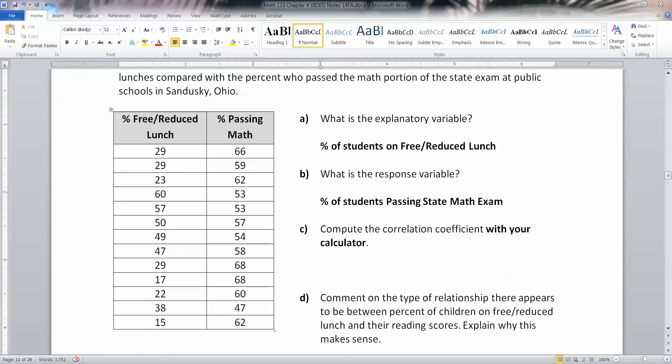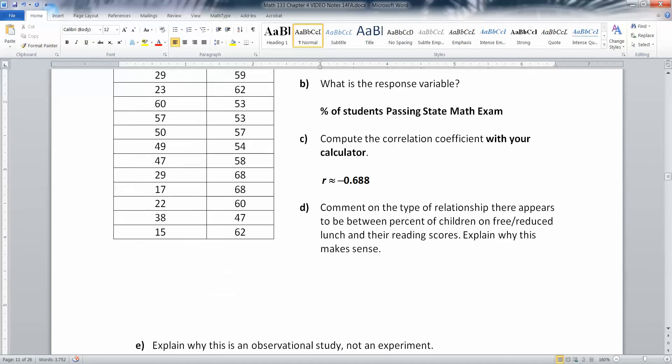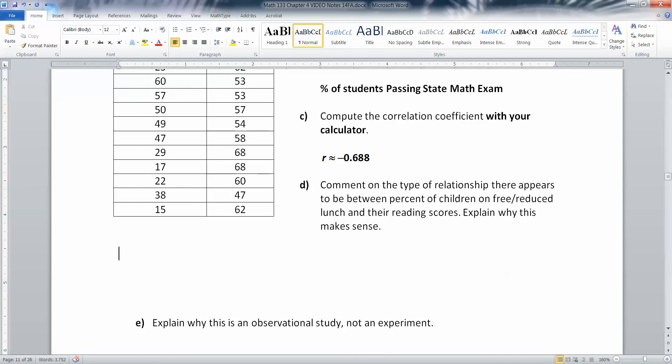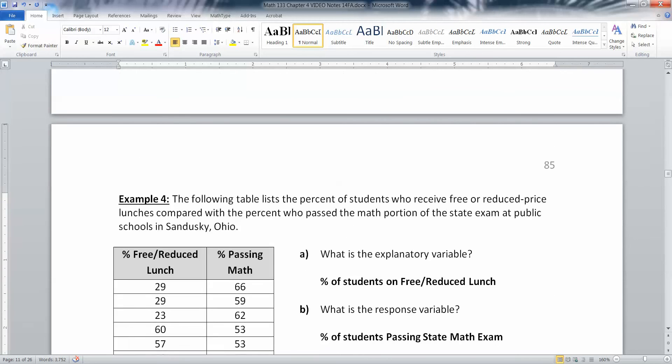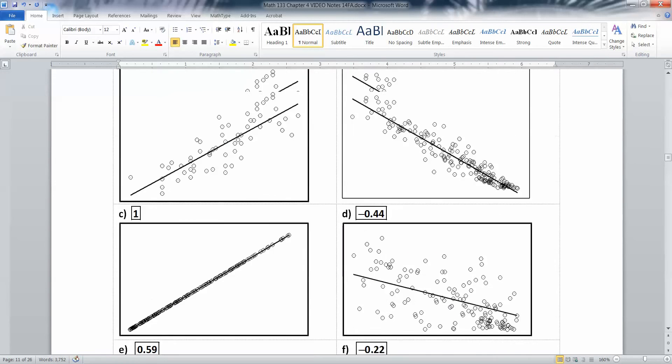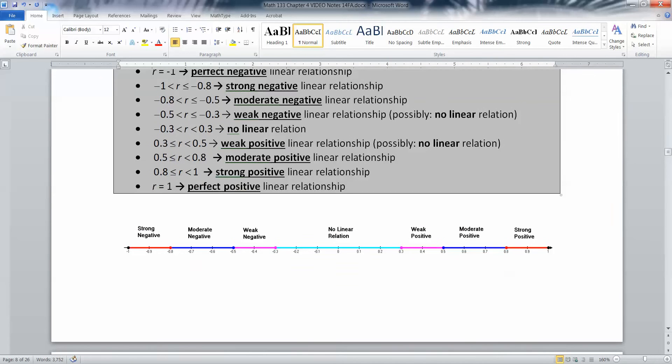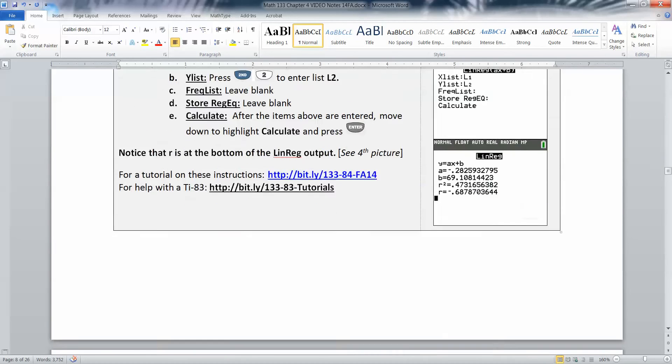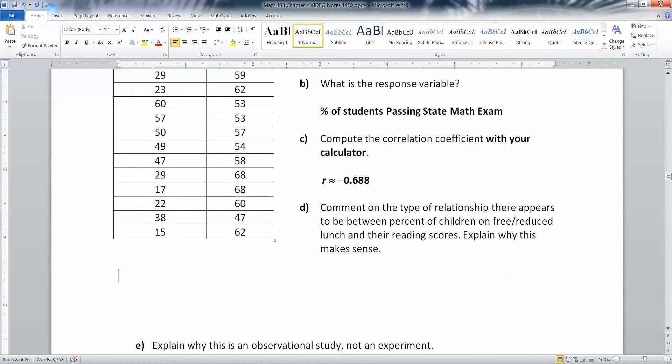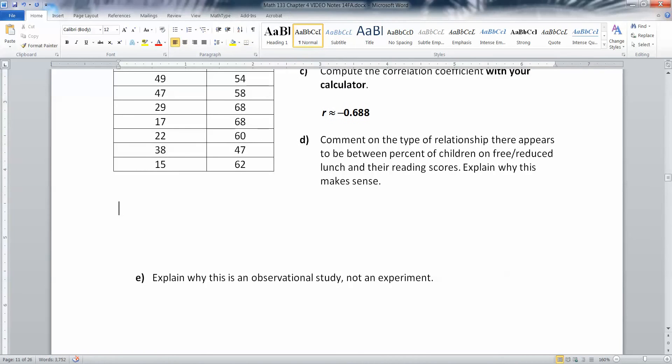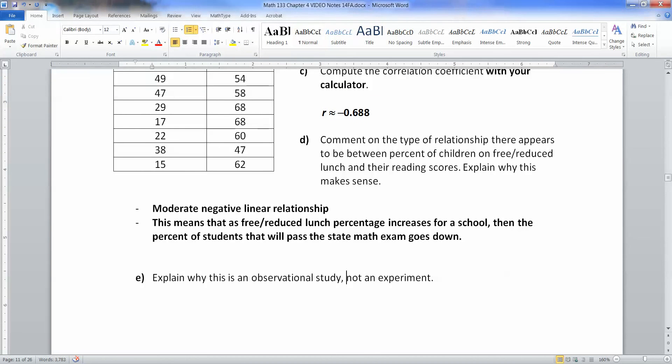So there is your correlation coefficient, negative 0.688. What type of relationship seems to be happening? That's negative. Is it moderate or weak? Negative 0.688 is right in this blue zone, kind of close to negative 0.7, so that's a moderate negative relationship.